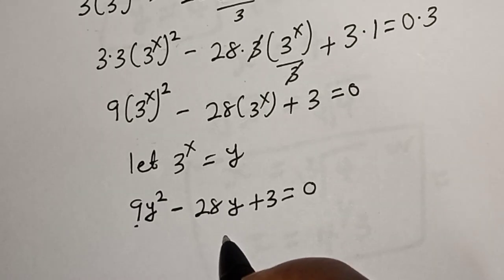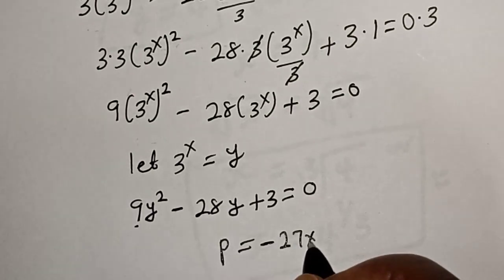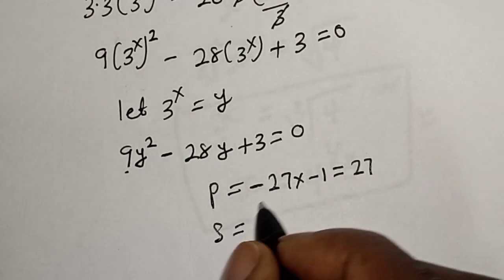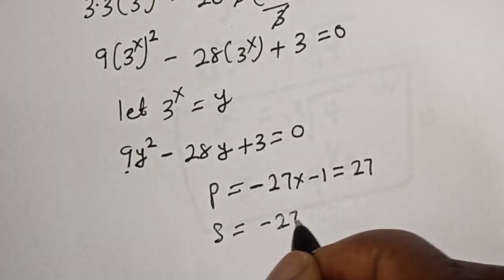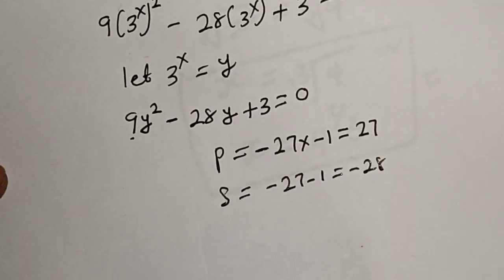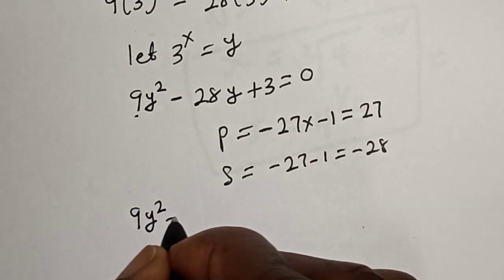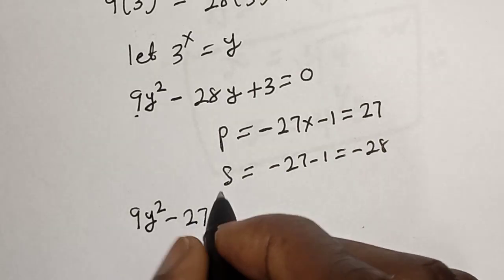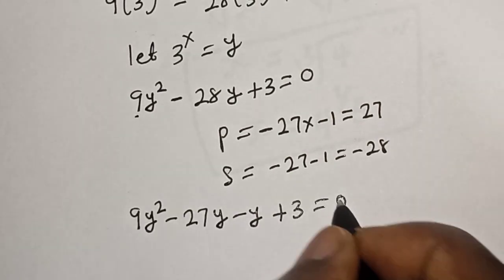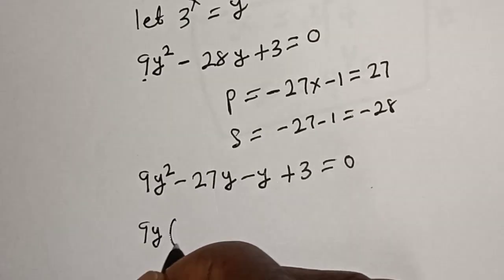We look for two numbers whose product is 27 and whose sum is minus 28. If P equals minus 27 multiplied by minus 1, that equals 27. And the sum equals minus 27 minus 1, which equals minus 28. So we have 9y squared minus 27y minus y plus 3 is equal to 0.